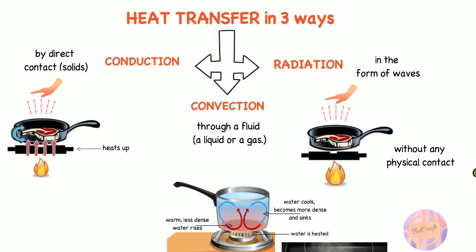So remember, heat can take the form of thermal energy traveling from one object to another, and this happens in three ways: conduction, convection, and radiation.